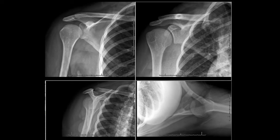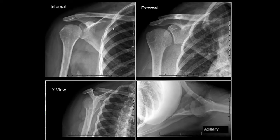Before we start talking about the shoulder dislocation, I want to review carefully the normal anatomy in the standard projections. Typically you might have an examination of the shoulder with a view in internal rotation, a view in external rotation that can either be AP or obtained tangential to the shoulder joint. We frequently like to have an axillary view and sometimes a Y view as well.